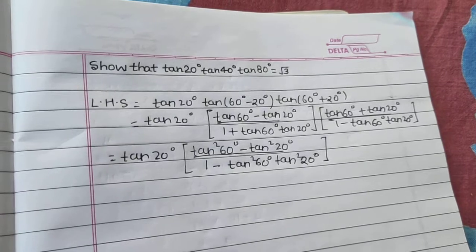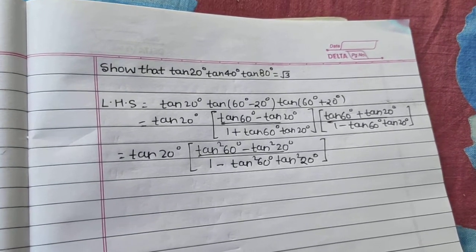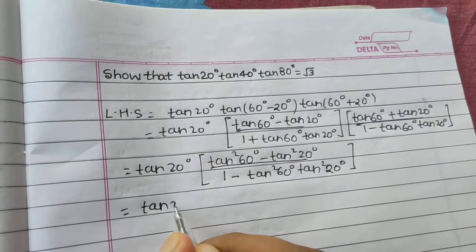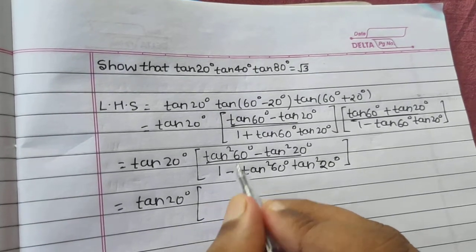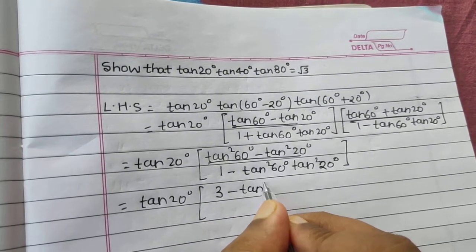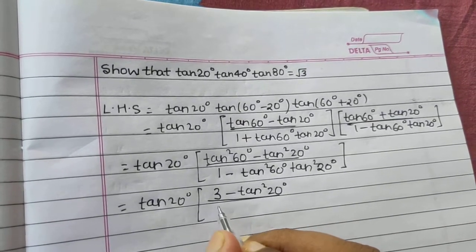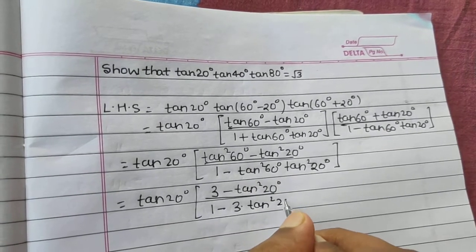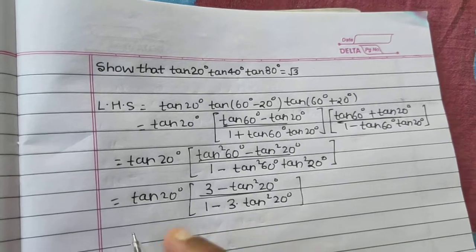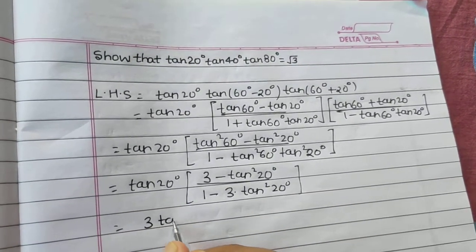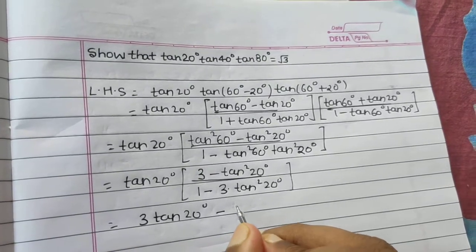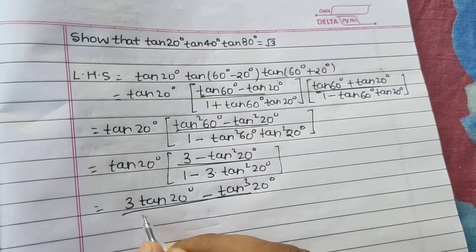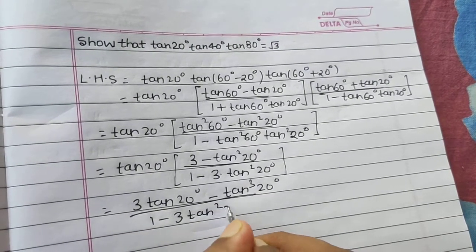We know tan60° = √3, so √3 squared is 3. So we have tan20° × (3 − tan²20°) divided by (1 − 3·tan²20°). Multiplying tan20° inside the numerator, we get (3·tan20° − tan³20°) divided by (1 − 3·tan²20°).